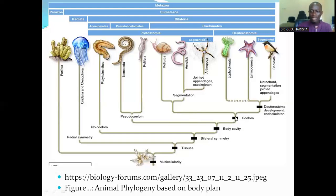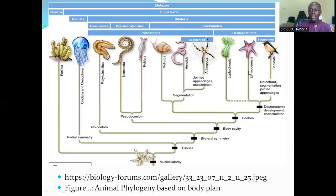The ones that have a true body cavity are classified into protostomes and deuterostomes. Protostomes are organisms in which during embryonic development the mouth forms before the anus. The protostomes are organisms in phylum Mollusca, Annelida, and Arthropoda. While the deuterostomes are classified into the Lophophorata, the Echinodermata, and the Chordata. The segmented organisms belong to phylum Annelida and Arthropoda. Then we have the coelomates, which consist of Mollusca, Annelida, Arthropods, Lophophorates, Echinoderms, and Chordates.